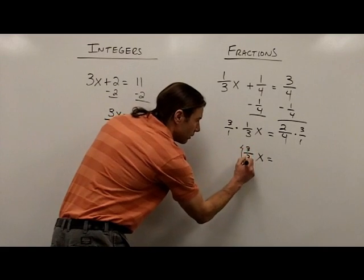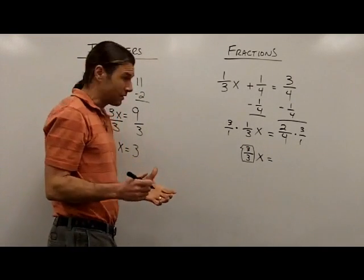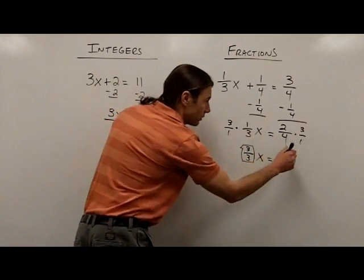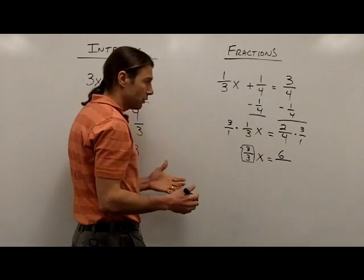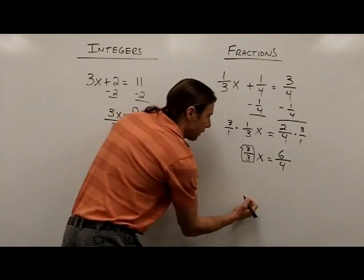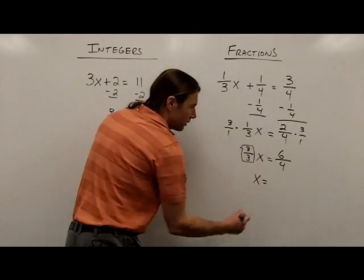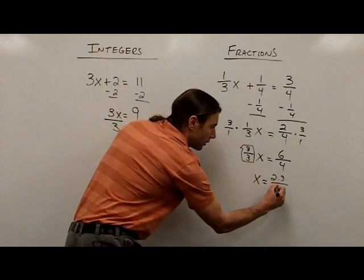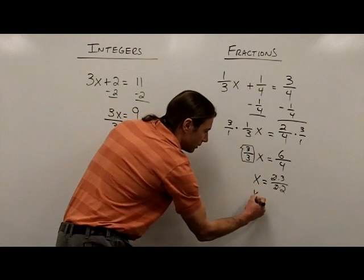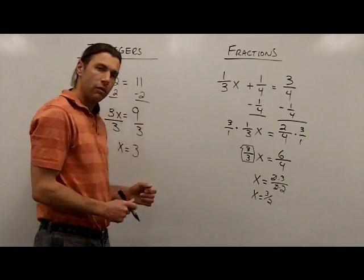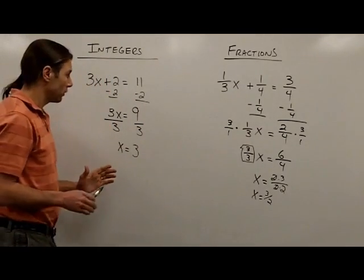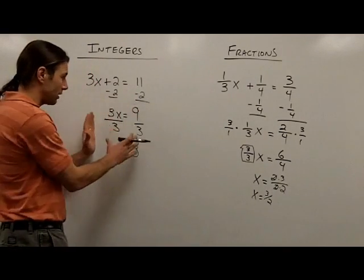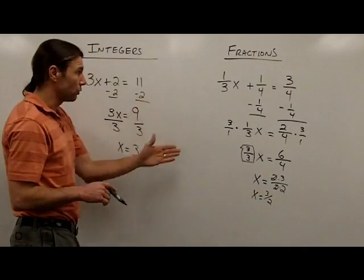On the right side, I have 2/4 times 3/1. With fraction multiplication, we multiply straight across: 2 times 3 gives 6 in the numerator, and 4 times 1 gives 4 in the denominator. So I have 1x on the left. On the right, I factor: 6 is 2 times 3, and 4 is 2 times 2. The 2s divide out, leaving x equals 3/2. The key is that the process for fractions is very similar to the process for integers — seeing that connection will guide your work.